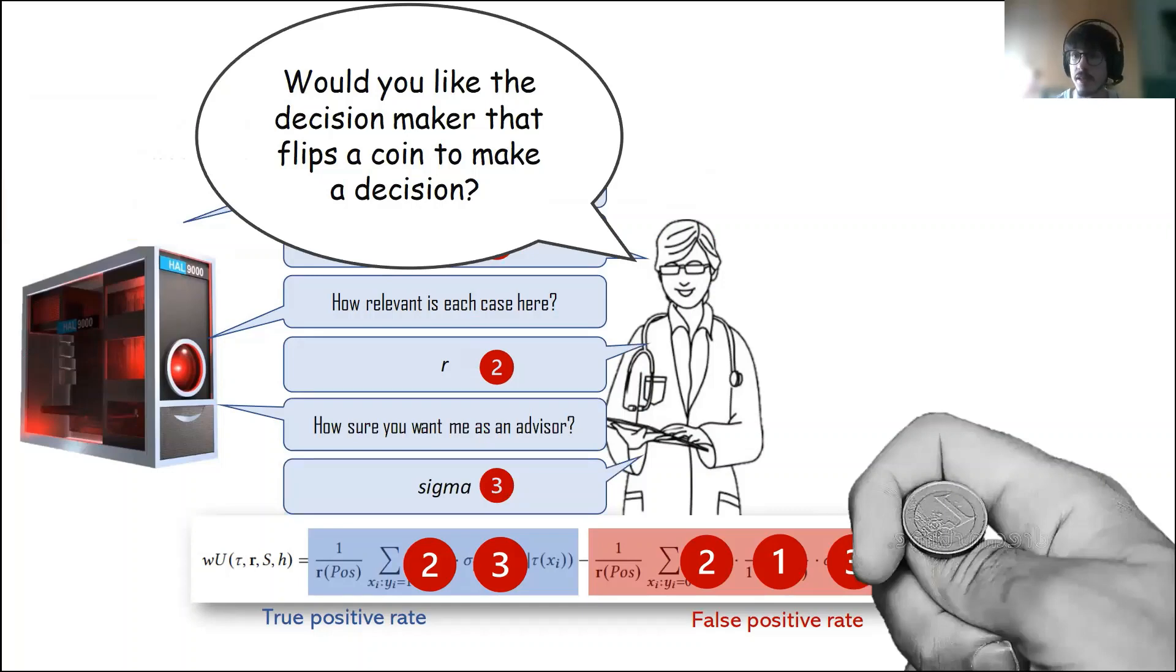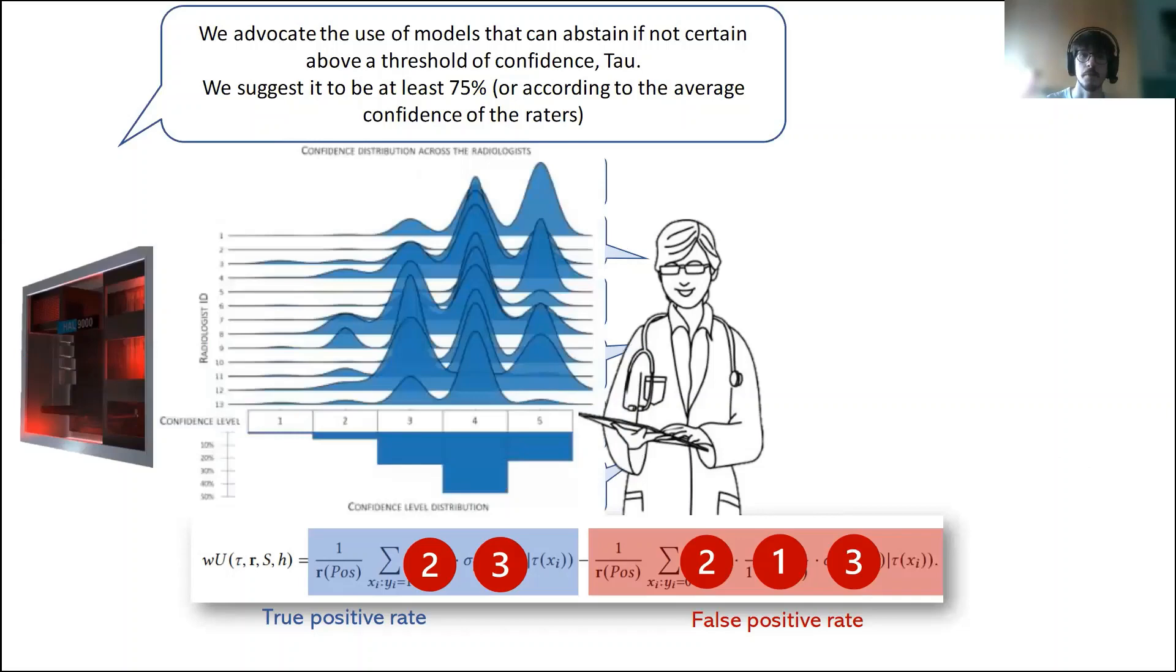The third element regards the confidence of the artificial intelligence systems. The rationale behind this item is that intuitively we would not trust a decision maker that flips a coin to make a decision. So obviously we should require the artificial intelligence system to satisfy the same property. In this case, we use another probability threshold, which is called sigma, that can be collected, for example, either by setting a given threshold value, for example, 75%. So we should require that the probability score for the decision expressed by the artificial intelligence system should be at least this value, or we can also ask the confidences that are required by the decision makers.